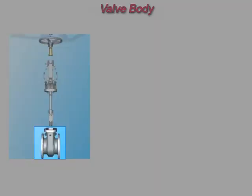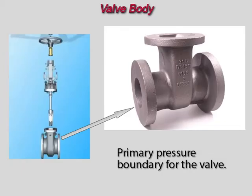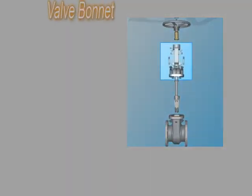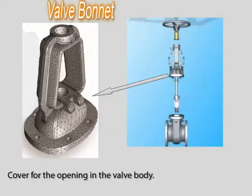The body is the primary pressure boundary of a valve. It is also the framework that holds the valve together. It houses the valve internals and provides connection points to the inlet and outlet piping. The cover for the opening of the valve body is the bonnet. Like valve bodies, bonnets vary in design. Some bonnets function as simply as valve covers, while others support valve internals and accessories such as a stem, disc, and actuator.